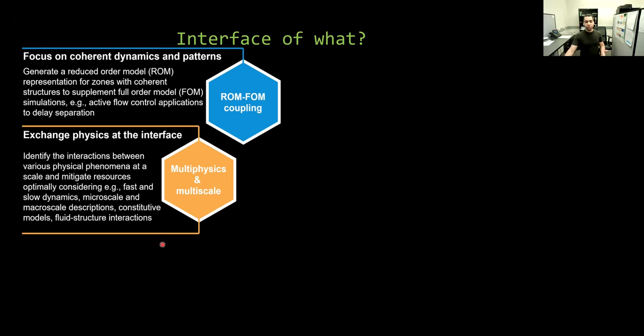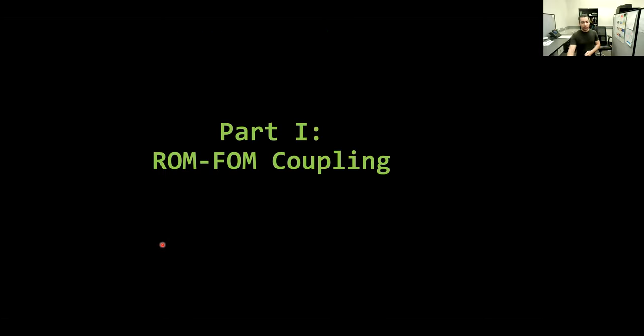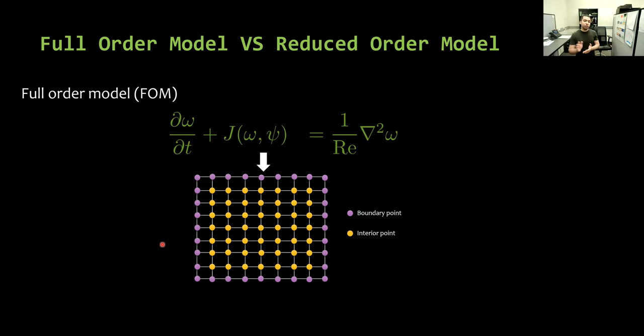The second block here is related to the use of different descriptions where we can use a microscale model for some part and a macroscale model for another part. And we need to move information from one side to the other. In the first part of the presentation, I will focus on the use of interface learning to achieve efficient and effective coupling between reduced-order models and full-order models. In the beginning, I will give an overview about model order reduction. We might have the Navier-Stokes equation representing our full-order model, and we would like to solve this PDE.